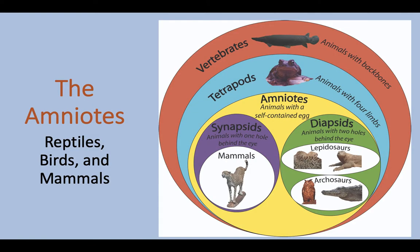Hey Zoology, this is Mrs. Knowles and today I'm going to talk to you about vertebrates called amniotes — this will also help with your homework assignment about amniotic eggs. I really like this picture because it shows that vertebrates are animals with a backbone. Everybody in this picture is a vertebrate, including fish, but some vertebrates are tetrapods — tetrapods being animals with four limbs.